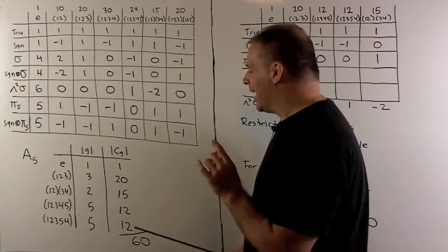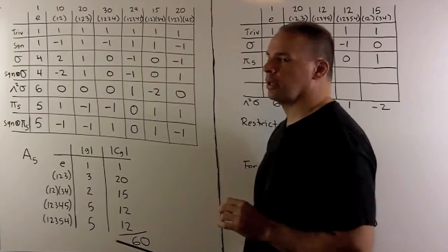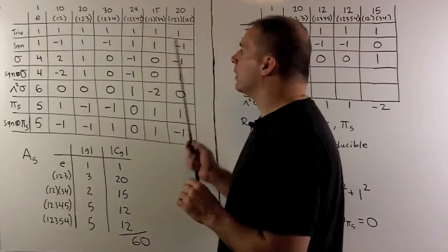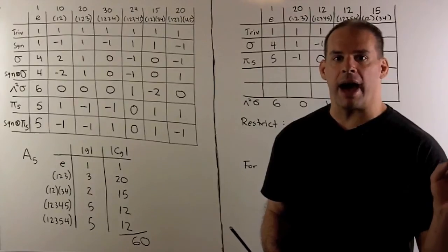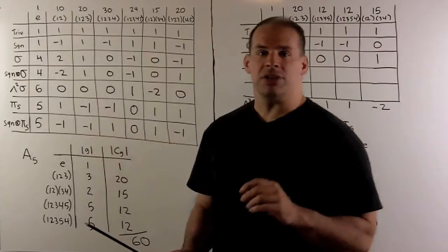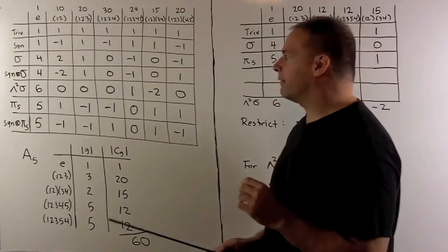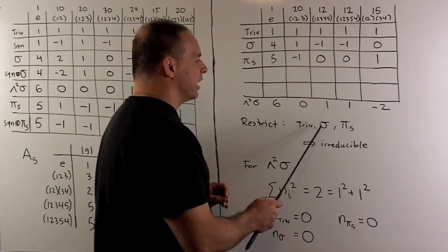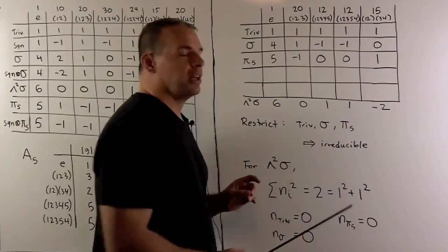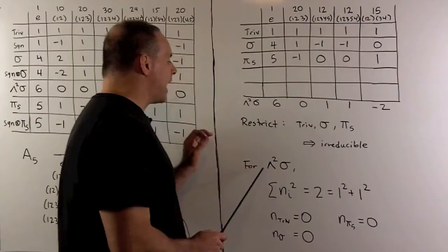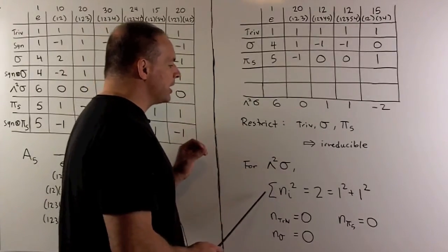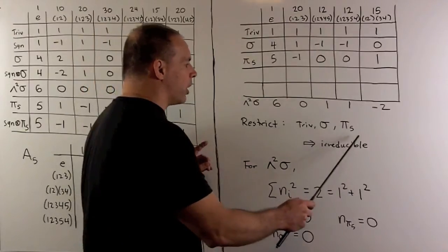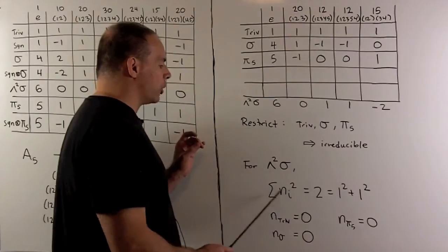The five-cycles split into two classes with 12 elements each. Note the five-cycle class has to split because 24 doesn't divide 60. Now, if we're looking for irreducible characters, we should take the character table for S5, restrict each irreducible character to A5, and see what happens. The sign representation equals 1 on A5, so we're only going to have four items to work with. The trivial, sigma, and the irreducible five-dimensional representations have characters that are irreducible on A5. When we look at the alternating two-tensors of sigma, we see it breaks into two pieces with multiplicity one each, and checking multiplicities against the three we already have gives zero — so something new comes from the alternating two-tensors.